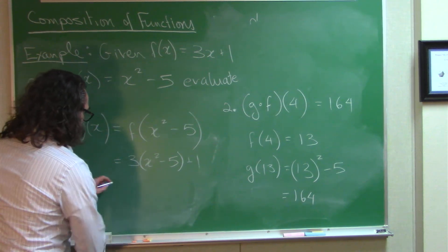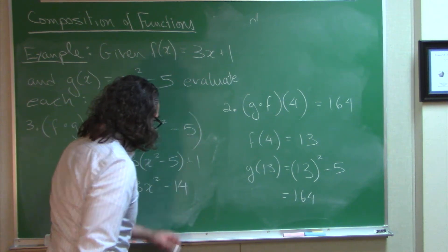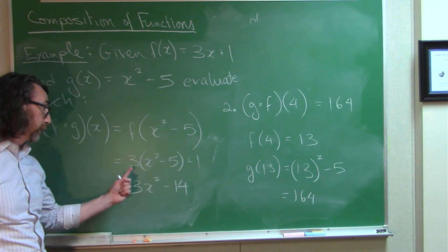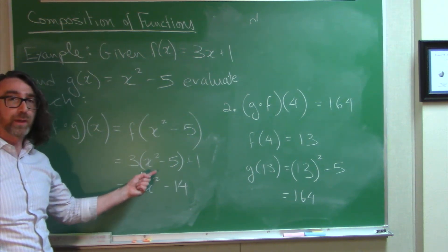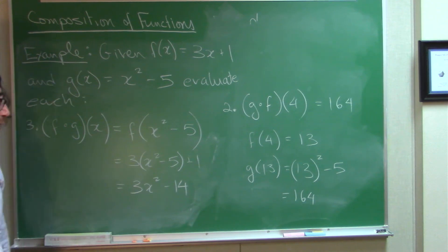Alright, and that gives us 3x squared minus 14. Okay, the reason I have the minus 14, well, I distribute. 3x squared minus 15 plus 1 gives me minus 14.